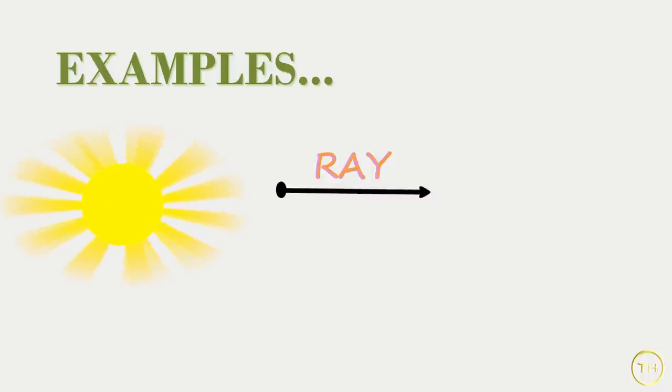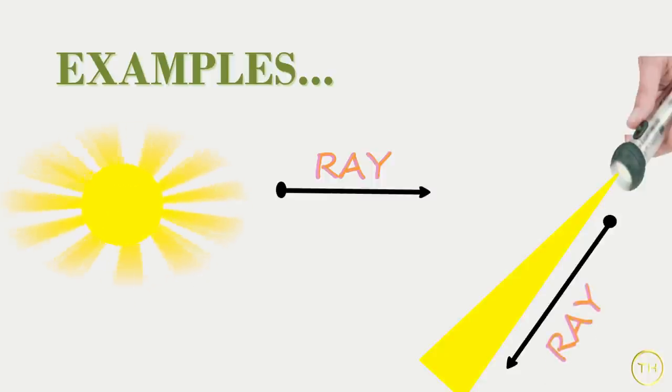Second example, torch light. Light rays from the torch also start from a point and go forward continuously in one direction.